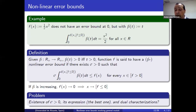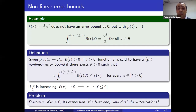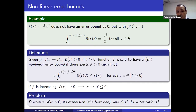It is also a frequent use case to hold an error bound where beta is the identity function. The interpretation of this inequality is the same as in the linear case: suppose that the function beta is increasing. This inequality also tells us that when the value of the function goes to zero, this forces this quantity to go to zero, and so also the error goes to zero.